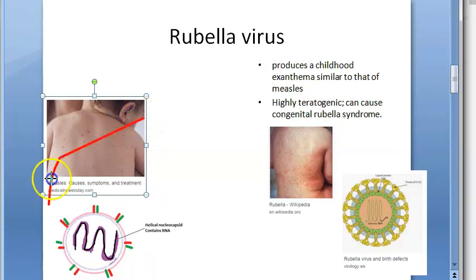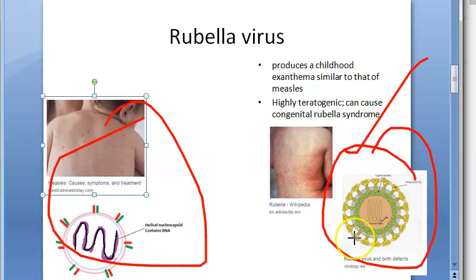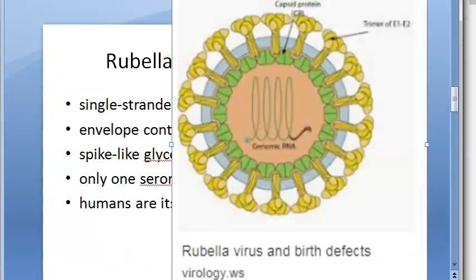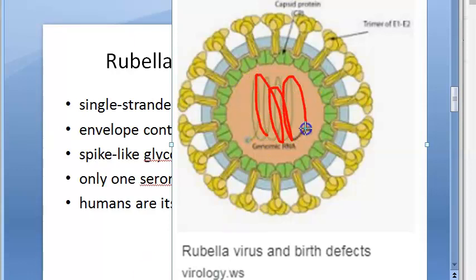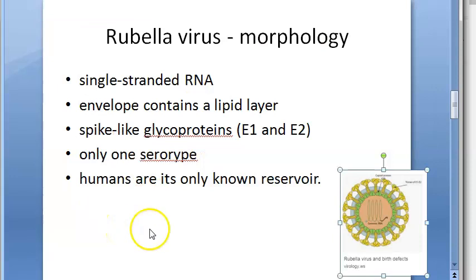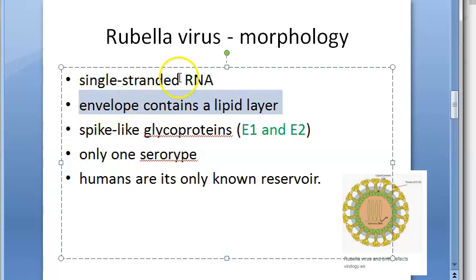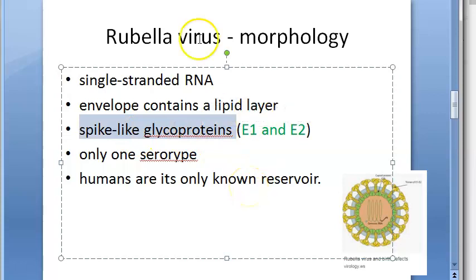Our focus today is on rubella, which causes a similar type of exanthema. Looking at the morphology of rubella virus: it has single-stranded RNA, a matrix, nucleocapsid, envelope, and glycoproteins attached to the envelope. The glycoproteins are named E1 and E2 — that's the key distinguishing detail here.